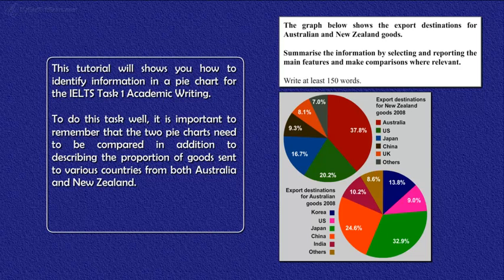Hi, this tutorial will show you how to identify information in a pie chart for the IELTS Task 1 Academic Writing. To do this task well, it is important to remember that the two pie charts need to be compared, in addition to describing the proportion of goods sent to various countries from both Australia and New Zealand.